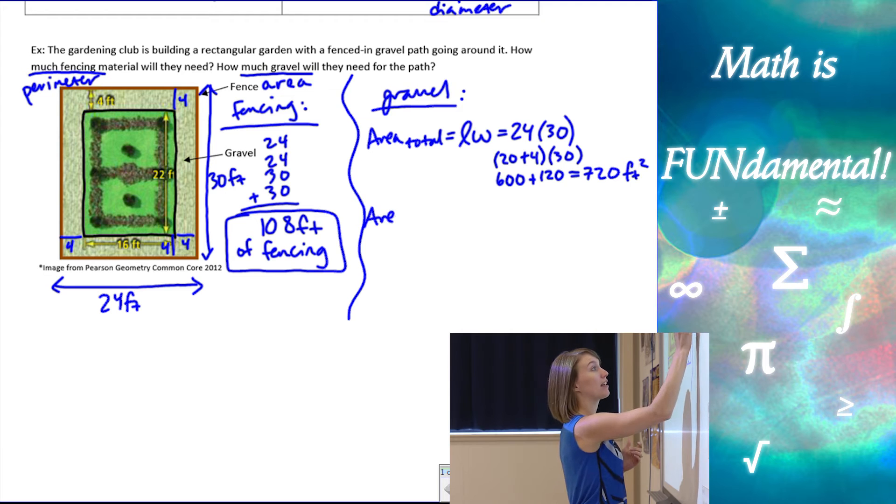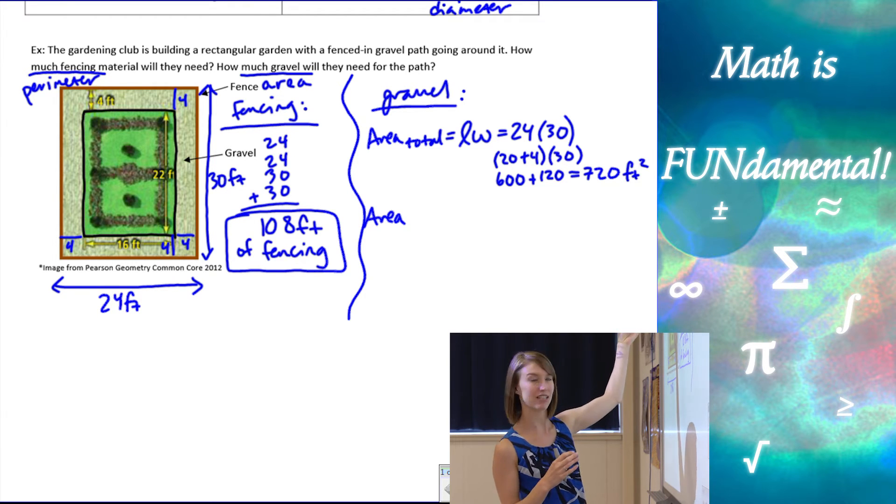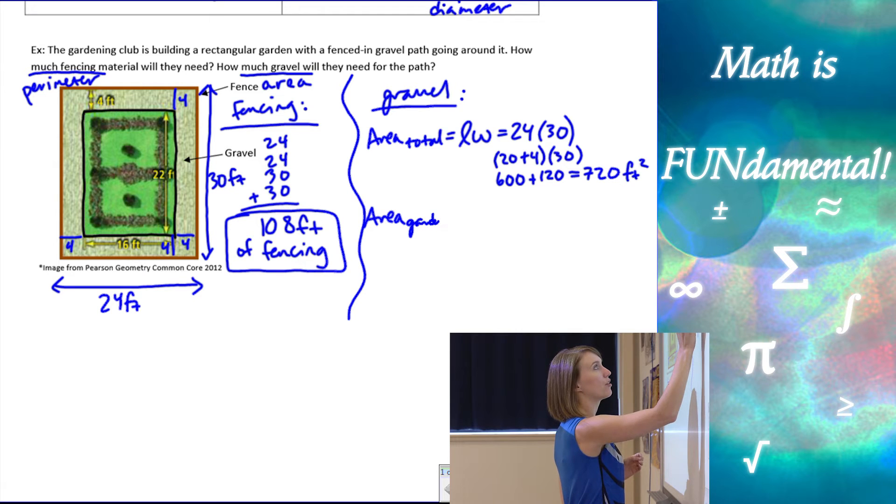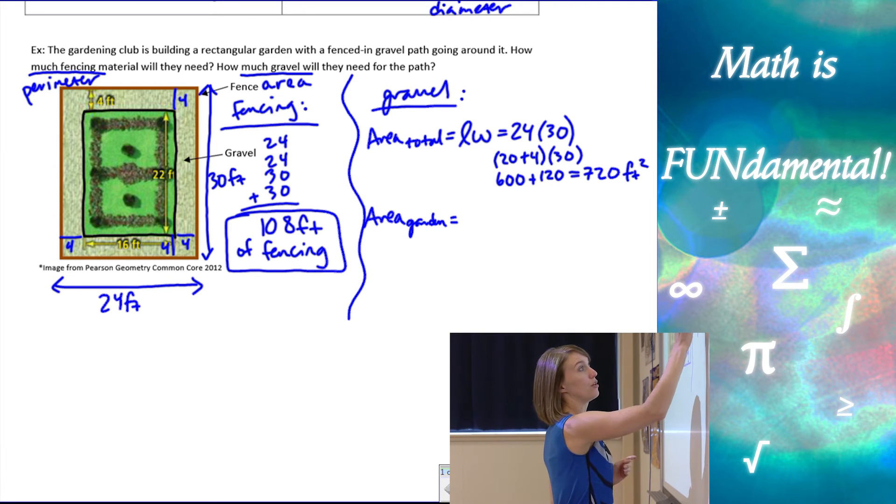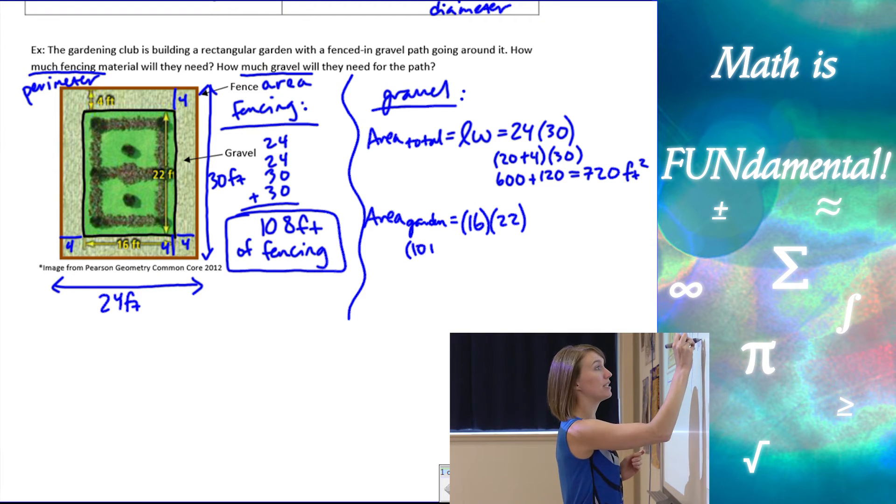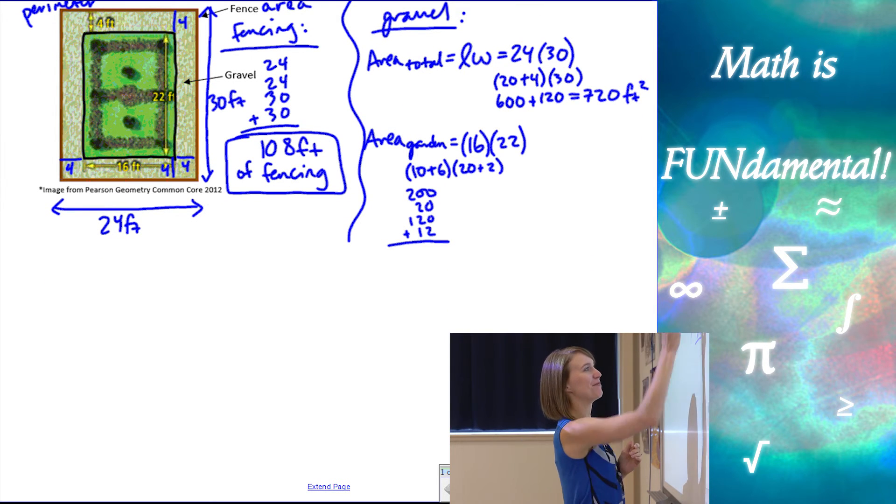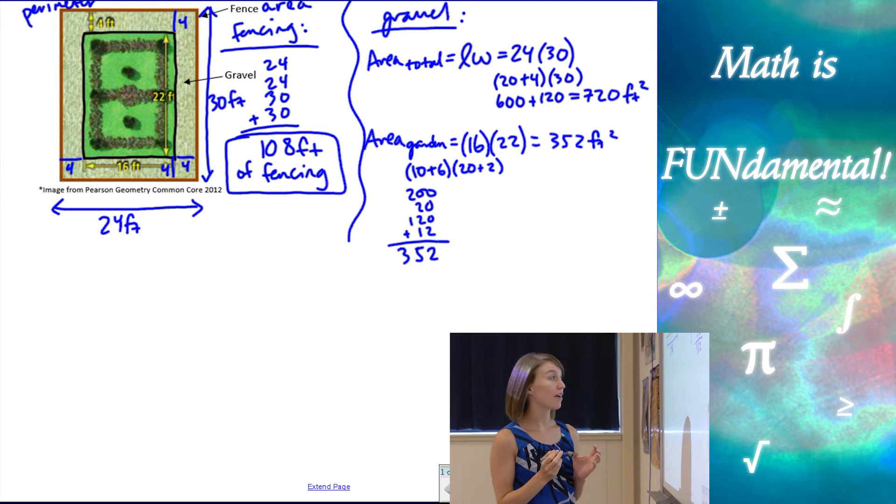And then we want the area because that's not, we're not done yet. 720 is the entire space, all the gravel plus the grass and the bushes and everything else in the garden, and we just want the gravel. So we need to take out that grassy space in the middle. So I want area of the garden and I'm going to subtract that out. So our garden is going to be 16 by 22. So 16 times 22. And I'm going to split that up 10 and 6, 20 and 2. And then I've got 220, 120 and 12. So here we've got 352 feet squared for the area of just the garden.